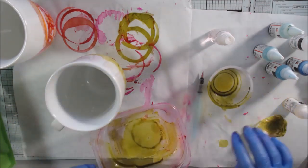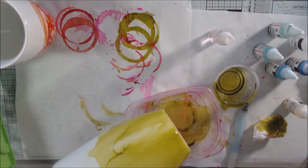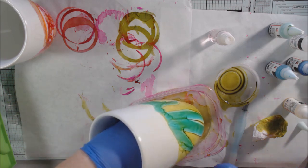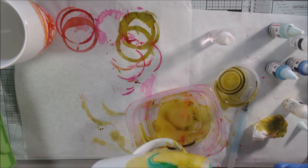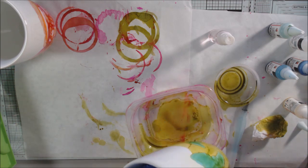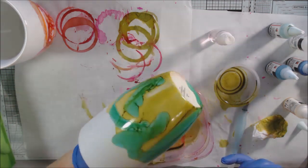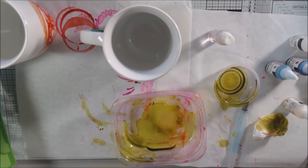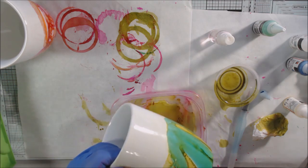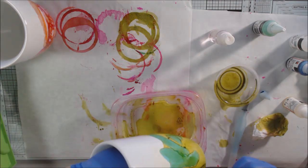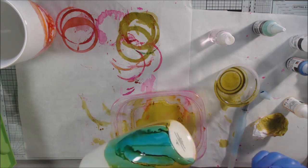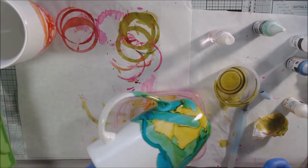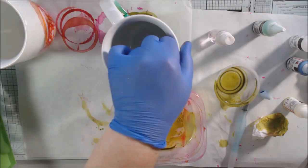I also just learned when looking through alcohol ink techniques that you can actually paint alcohol ink on canvas if you use something called Kilz 2. It's like a paint that you seal the canvas with and then it makes it non-porous. I always thought you had to do it on non-porous surfaces like Yupo for paintings. I've seen a lot of people paint really cool paintings and I always thought they were doing it on Yupo, but apparently you can do it on canvas too.